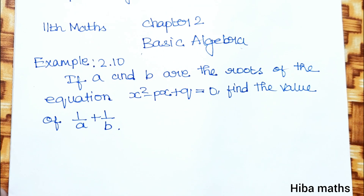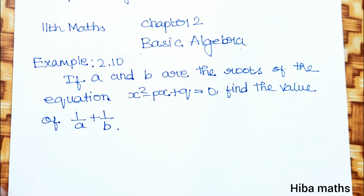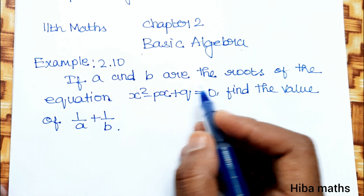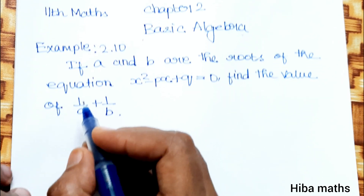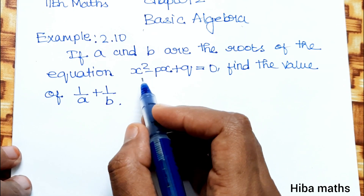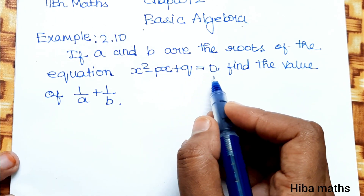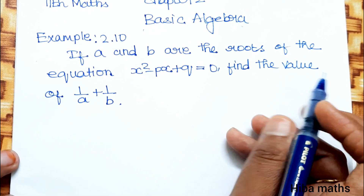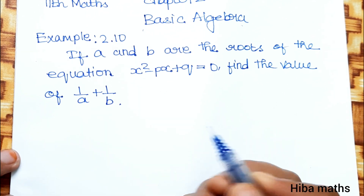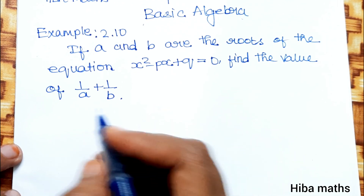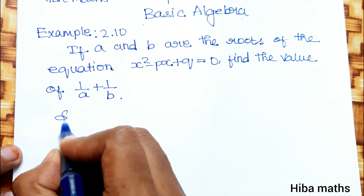Hello students, welcome to Hibamag 11th Standard Maths, Chapter 2, Basic Algebra. Example 2.10: If a and b are the roots of the equation x squared minus b times x plus q equals 0, find the value of 1 by a plus 1 by b.